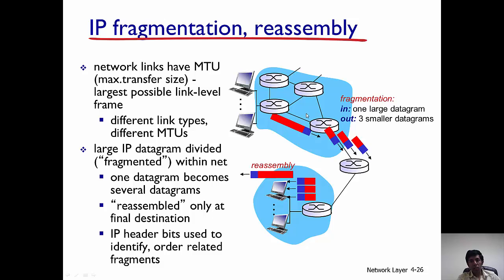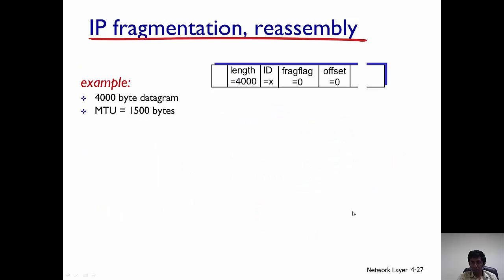These three smaller datagrams are then going to traverse the entire network and then they are going to be reassembled at the receiver. Note that fragmentation can occur in the middle of the network. Reassembly does not occur in the middle of the network. Reassembly only takes place at the final destination, and to enable this kind of reassembly to take place, we will be using some of the header fields.